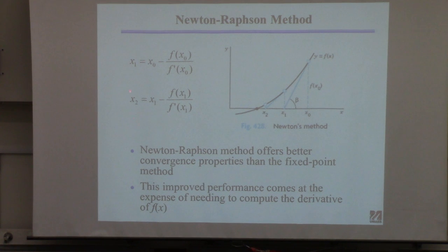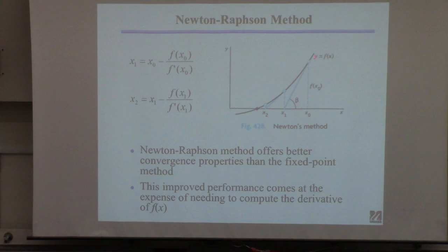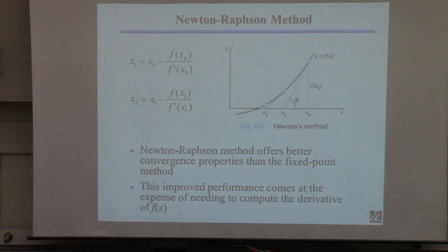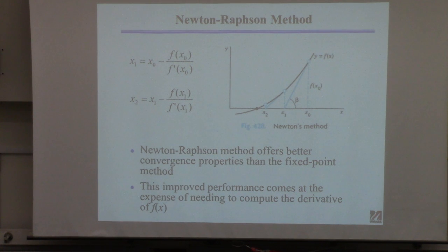Here's a graphical picture of how Newton-Raphson works for the first two iterations. You guess x₀, come up to the curve, and the derivative gives you the slope — the tangent line at that point. Following that tangent line to zero gives you x₁. Then you come up to the curve at x₁, evaluate the derivative again, and get x₂. You can see you're converging to the root quite quickly. By evaluating the derivative, you know something about the shape of the curve and can take advantage of it.